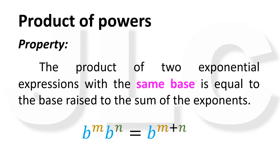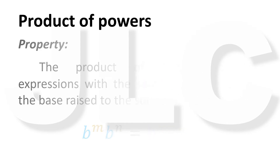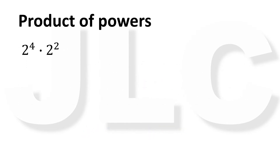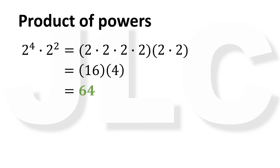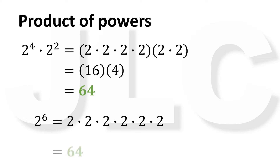Let's verify by example. Let's evaluate 2 raised to 4 times 2 raised to 2. This is equal to four 2s multiplied together times two 2s multiplied together, which equals 16 times 4, and 16 times 4 is 64. Now let's evaluate 2 raised to 4 plus 2, or 2 raised to 6. This equals six 2s multiplied together, which is equal to 64.